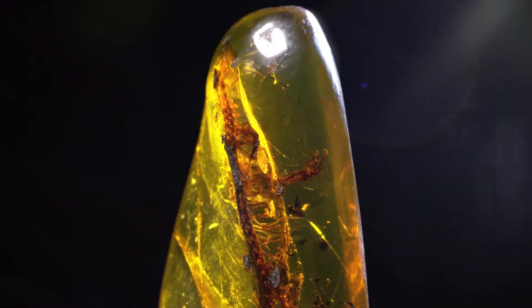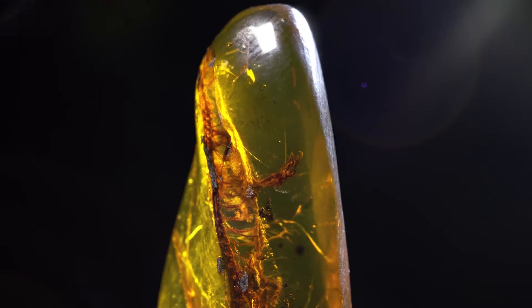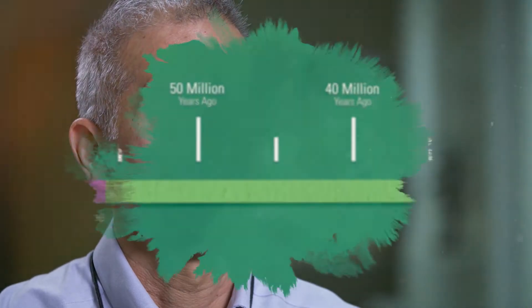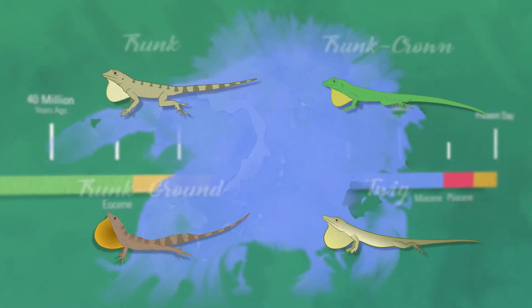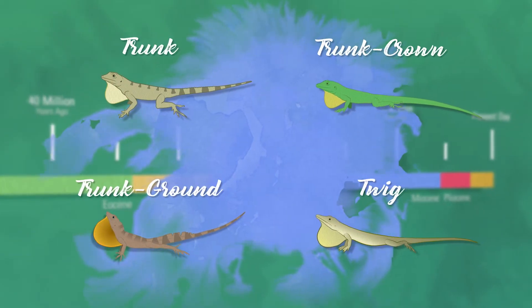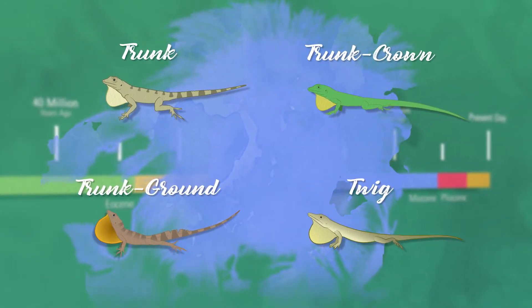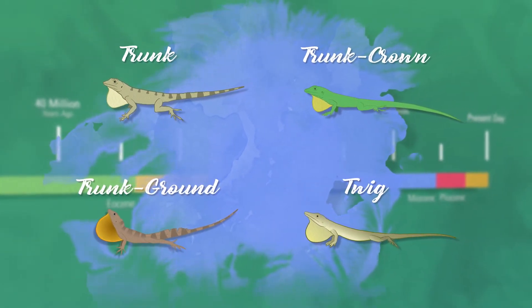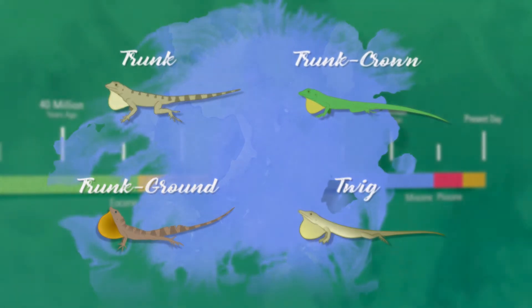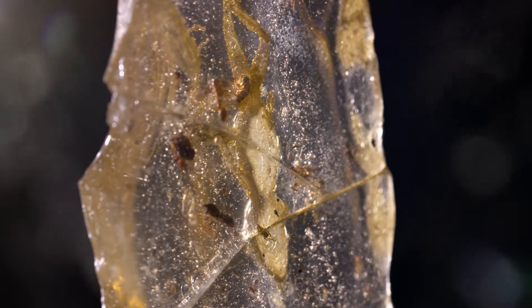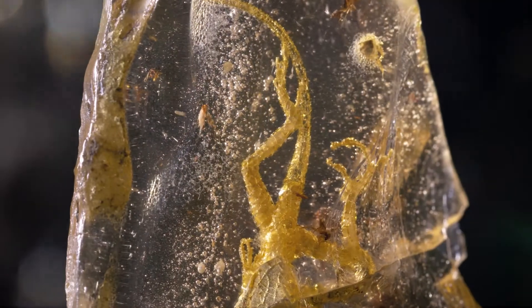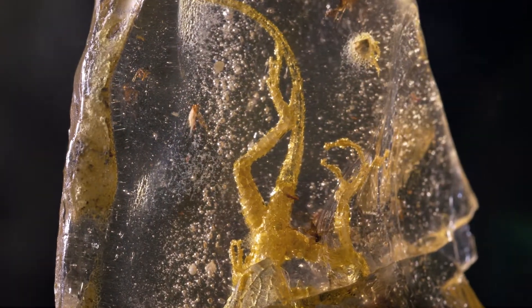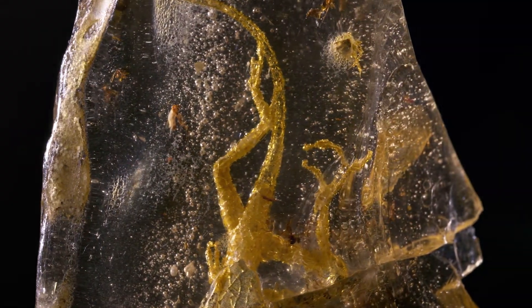Anoles had already diversified a lot by that time, and in fact that's what these amber fossils show. We have at least four different ecomorphs from that period, maybe 15 to 20 million years ago. It's amazing to look at these amber specimens and to realize that 20 million years ago, the ecomorphs had already originated.